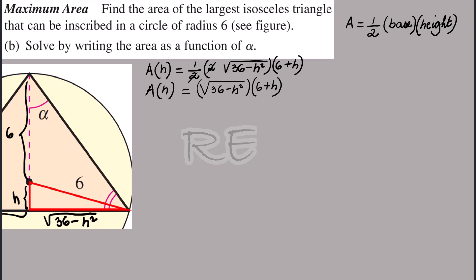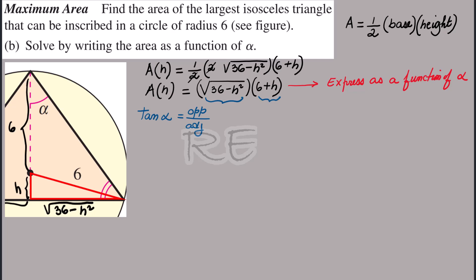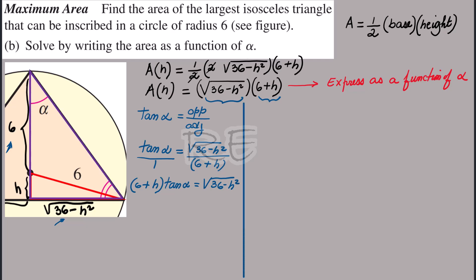Now A(h) will be expressed as a function of alpha, and we should be able to find the same area. The first trigonometric ratio that comes to mind is tangent alpha — opposite over adjacent — where the opposite side is √(36 − h²) and the adjacent side is 6 + h. So tan(α)/1 = √(36 − h²)/(6 + h), and by cross multiplication, (6 + h)·tan(α) = √(36 − h²). We now have a replacement for √(36 − h²).